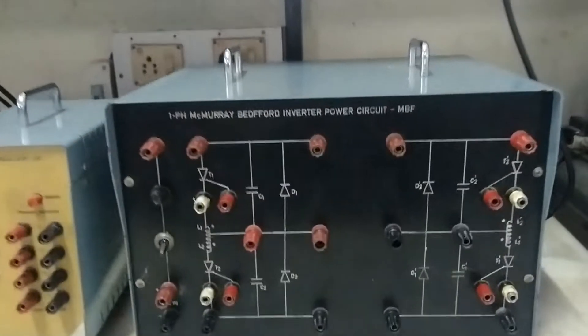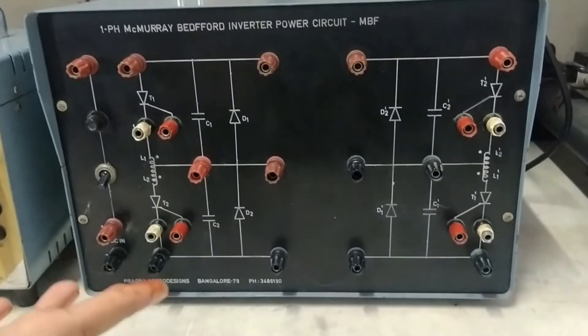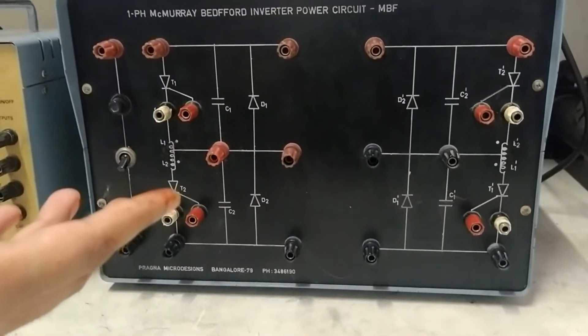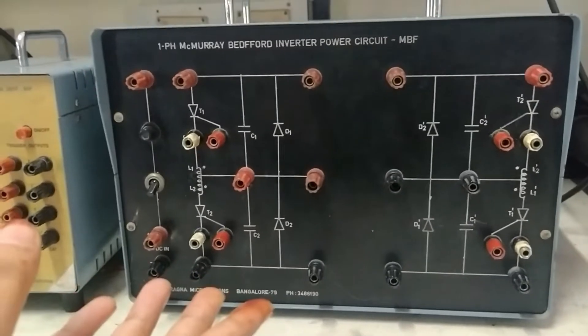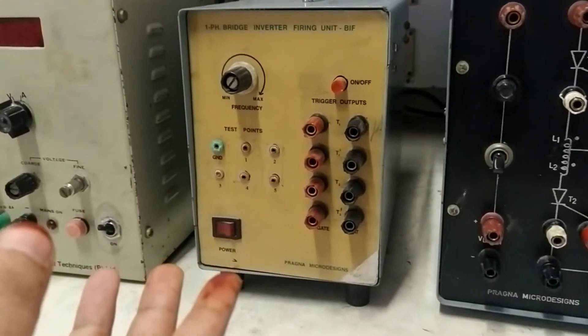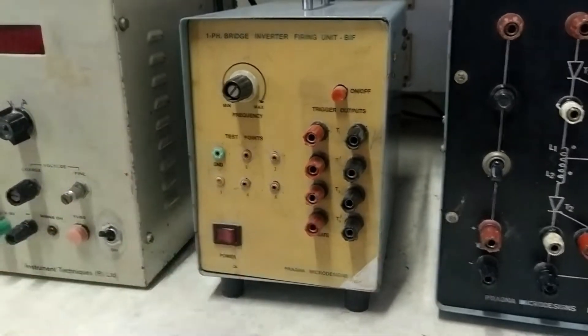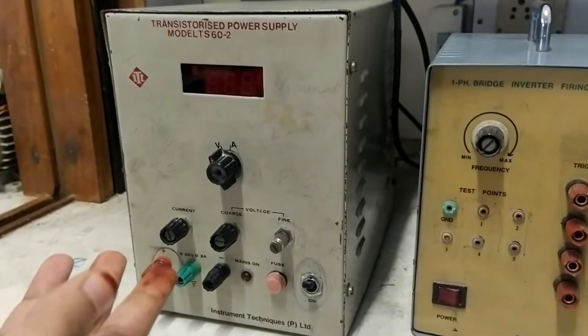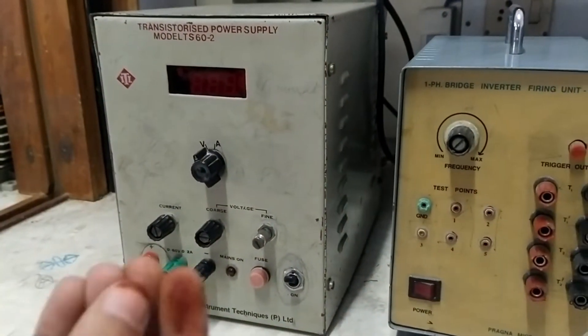So this is the power circuit. You can see the power circuit. That is the trainer kit of single phase modified McMurray-Bedford Full Bridge Inverter. And next is the single phase bridge inverter firing circuit. Next is the DC power regulator power supply which we are going to take as input of 30 volts.